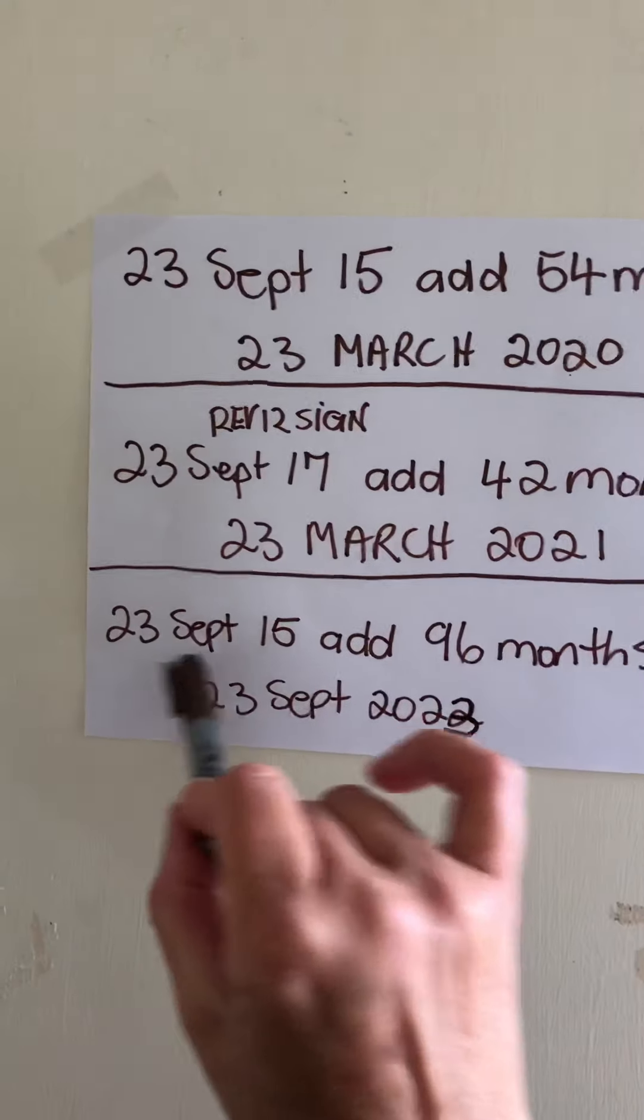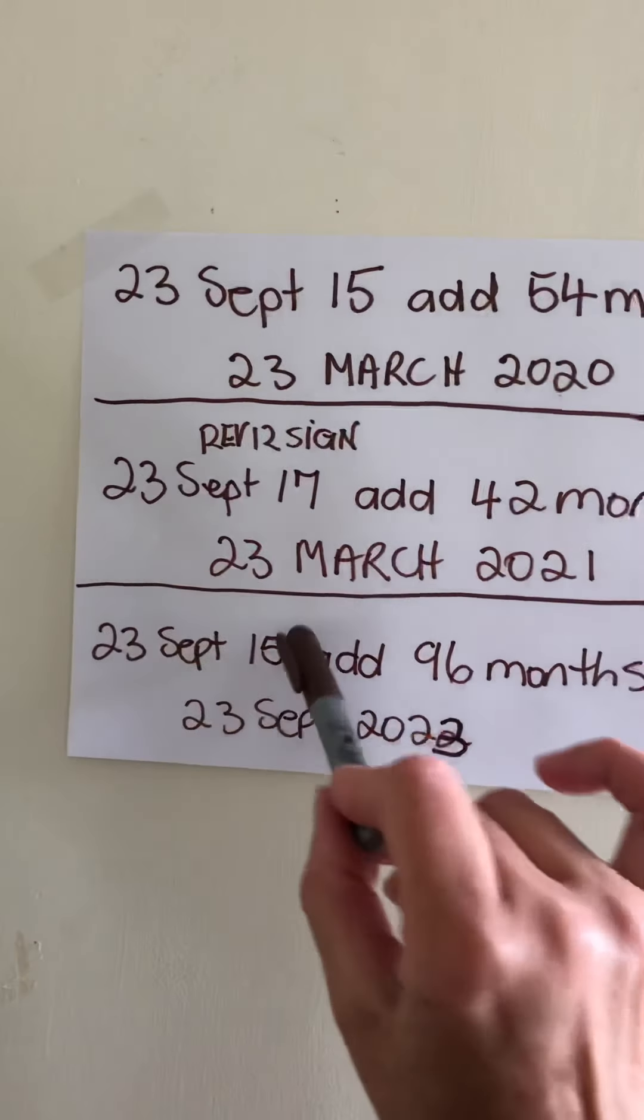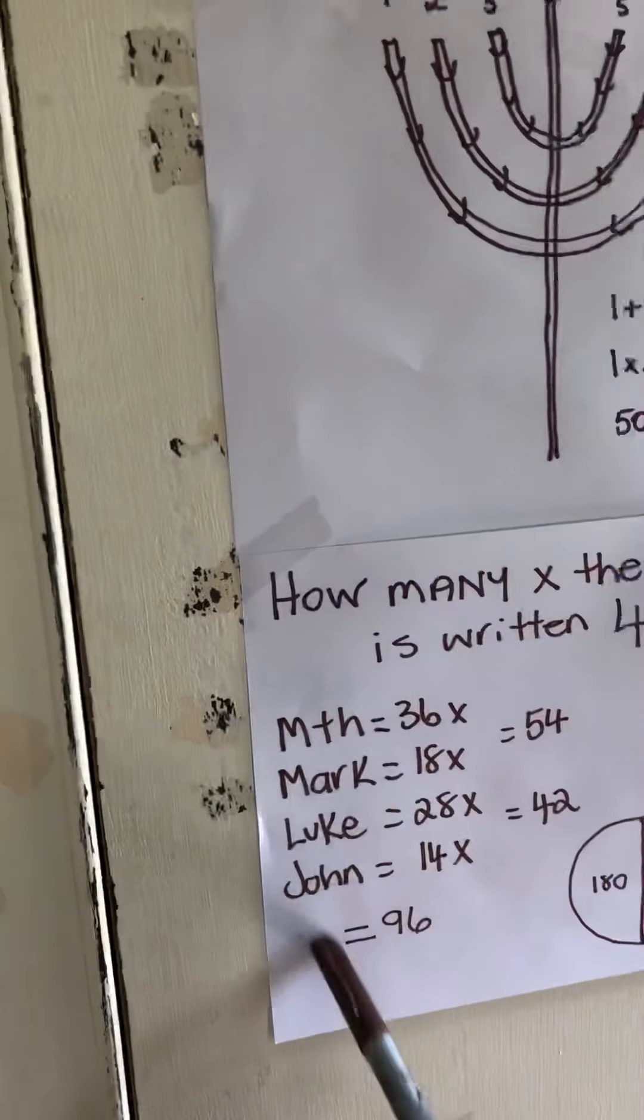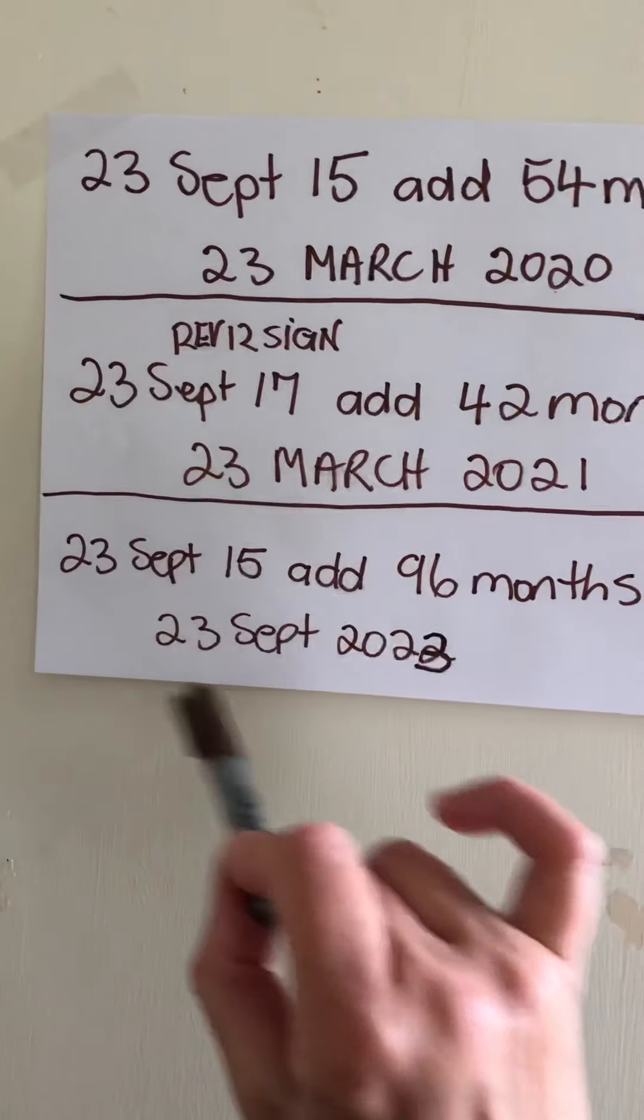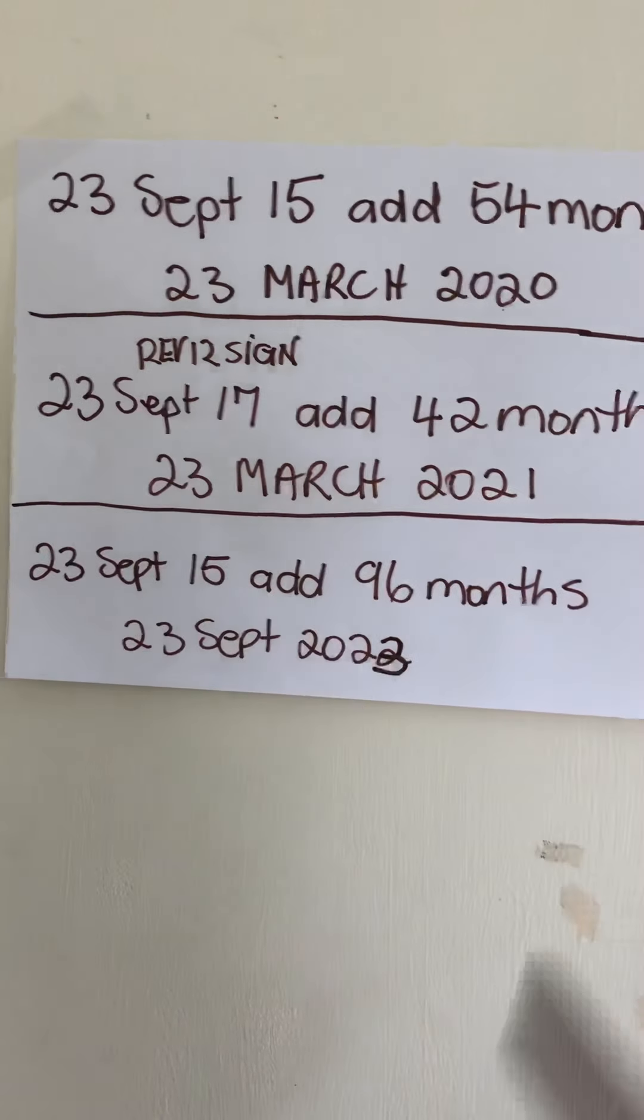From the 23rd of September 15, the date that the covenant was made at 96 months, brings us to the 23rd of September 2023.